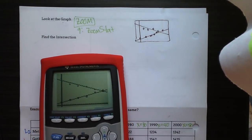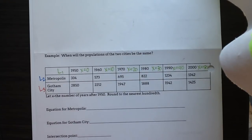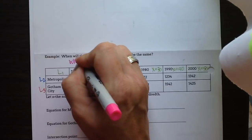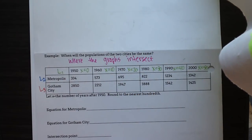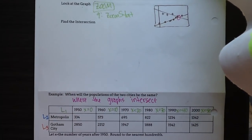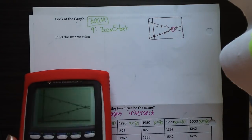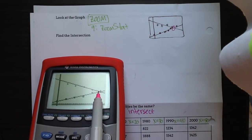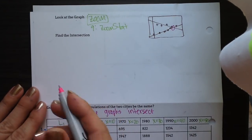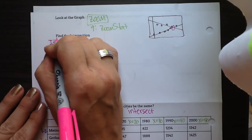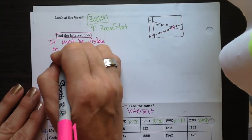The whole reason we did this was to find the intersection point. In our example, the question is: when will the populations of the two cities be the same? That happens where the graphs intersect. The calculator can find that point for us. When finding the intersection, it must be visible on the screen — if it's not, you will need to adjust the window.